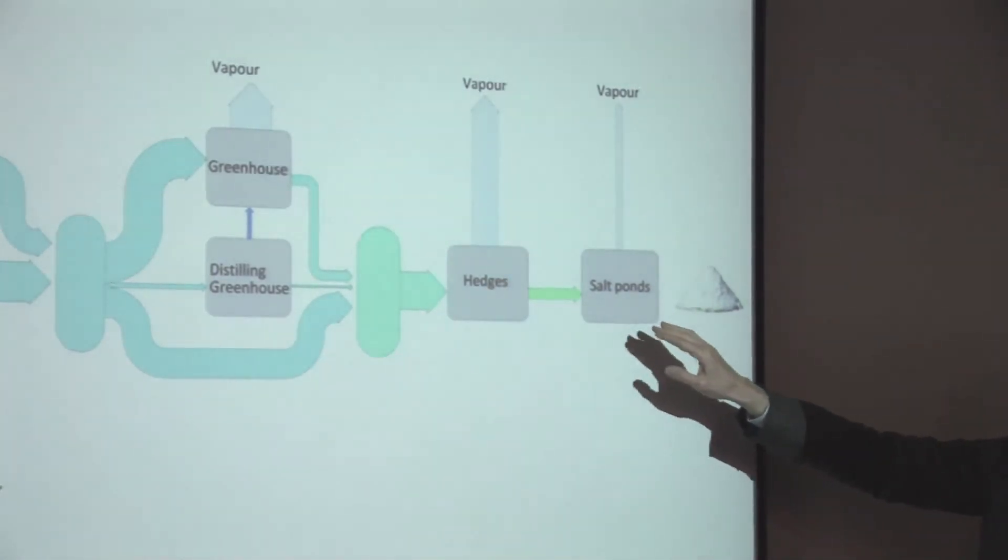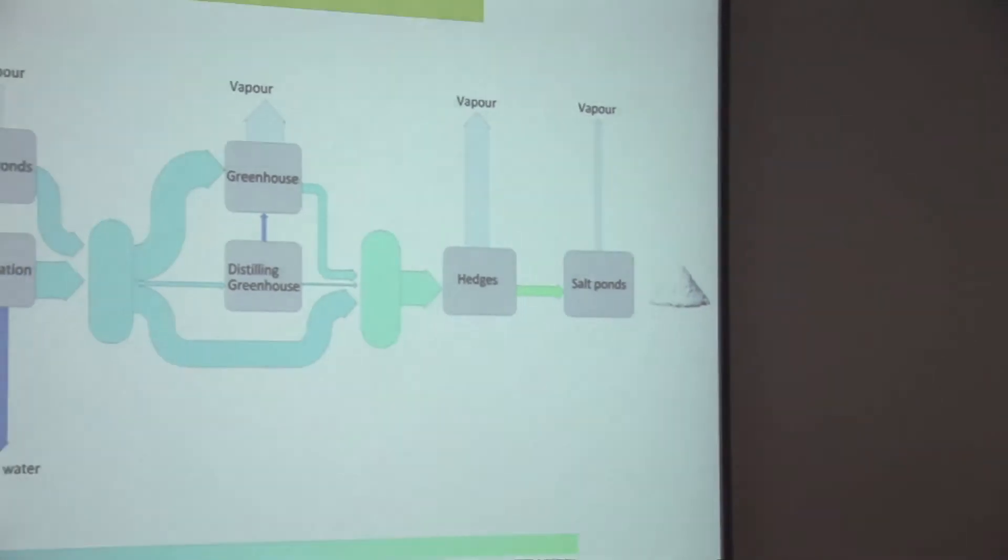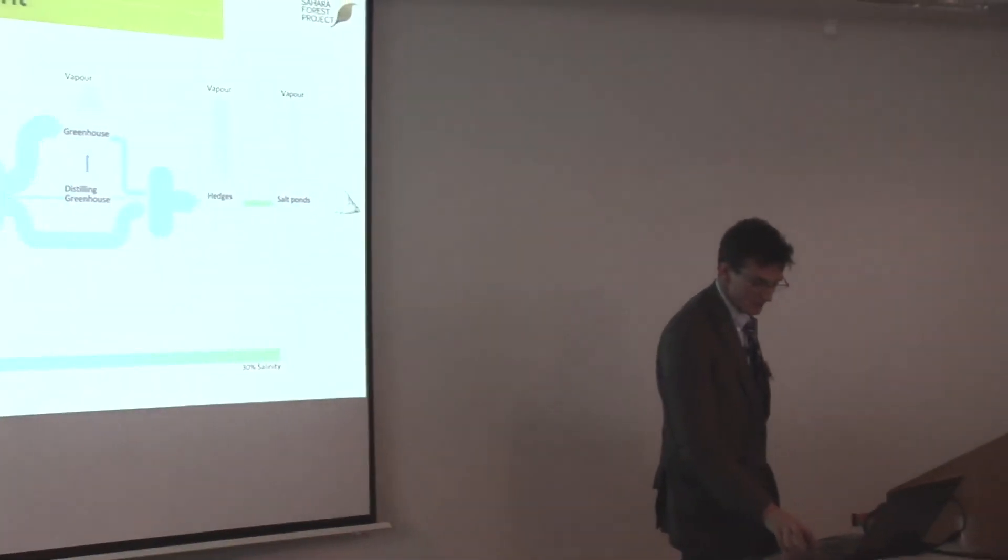So we're then going into a much lower-tech version of the greenhouse. This is an outside hedge, which I'll get onto. Eventually, we run the water into a salt pond, where the final bit of evaporation takes place, and then a pile of salt. We're hoping to get value from all of those items.